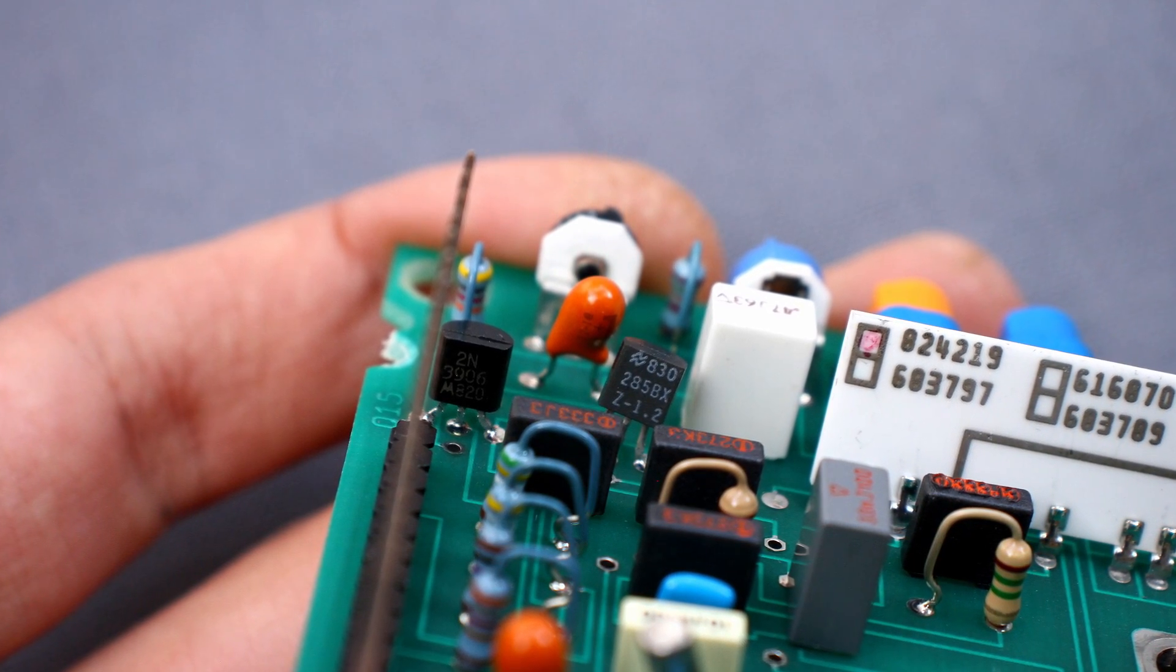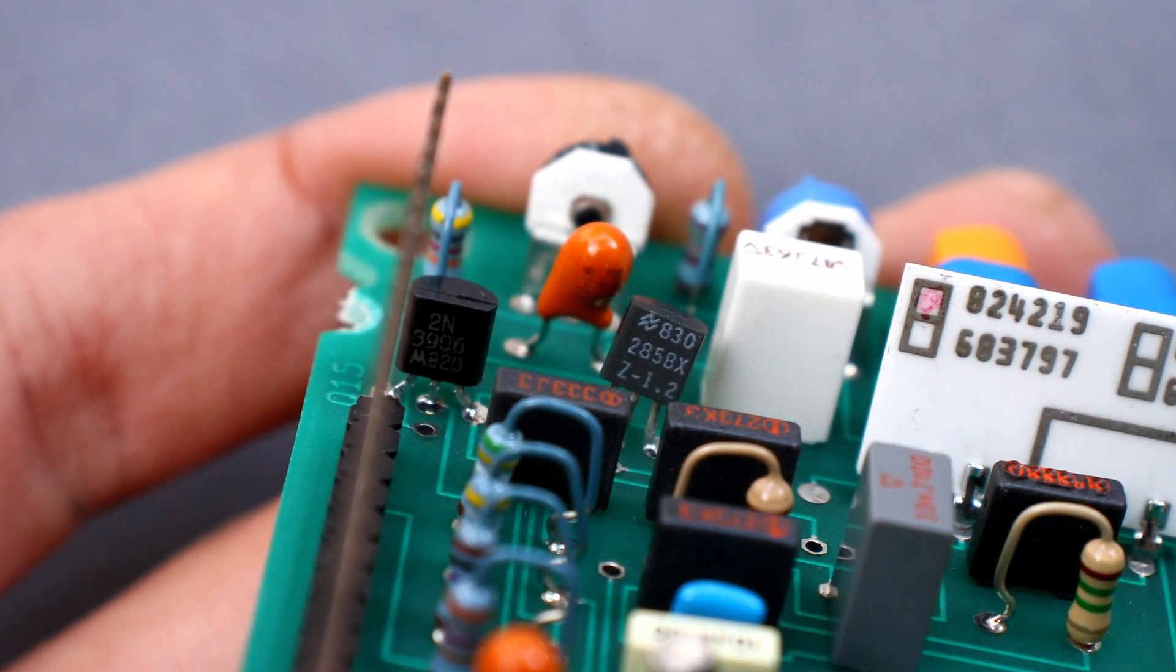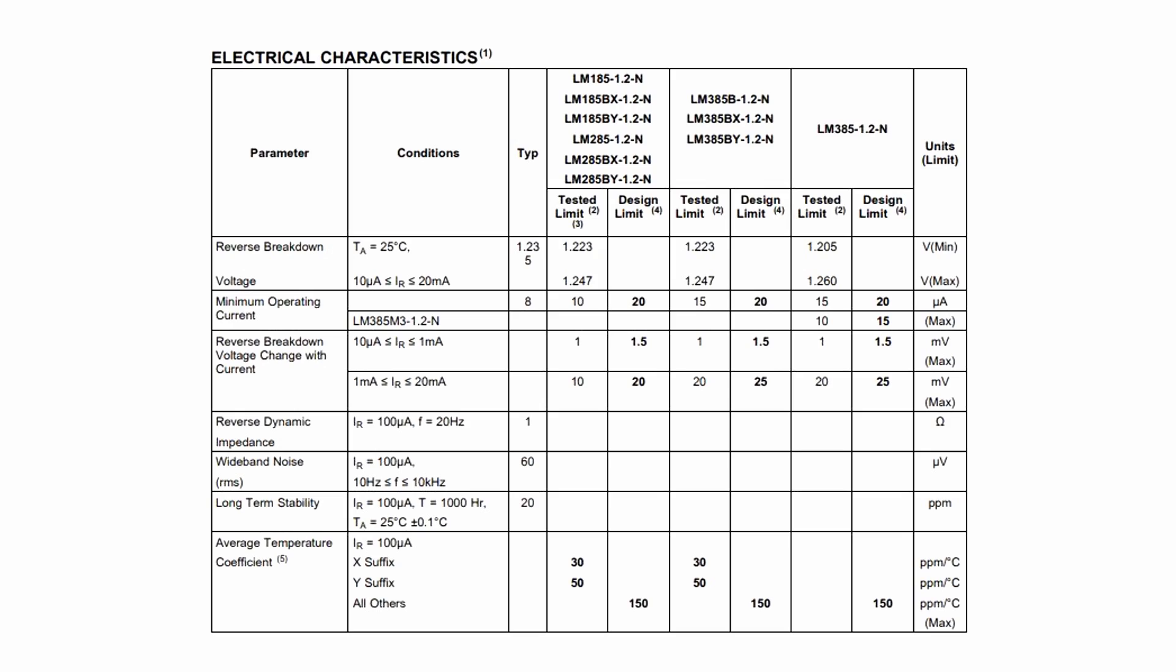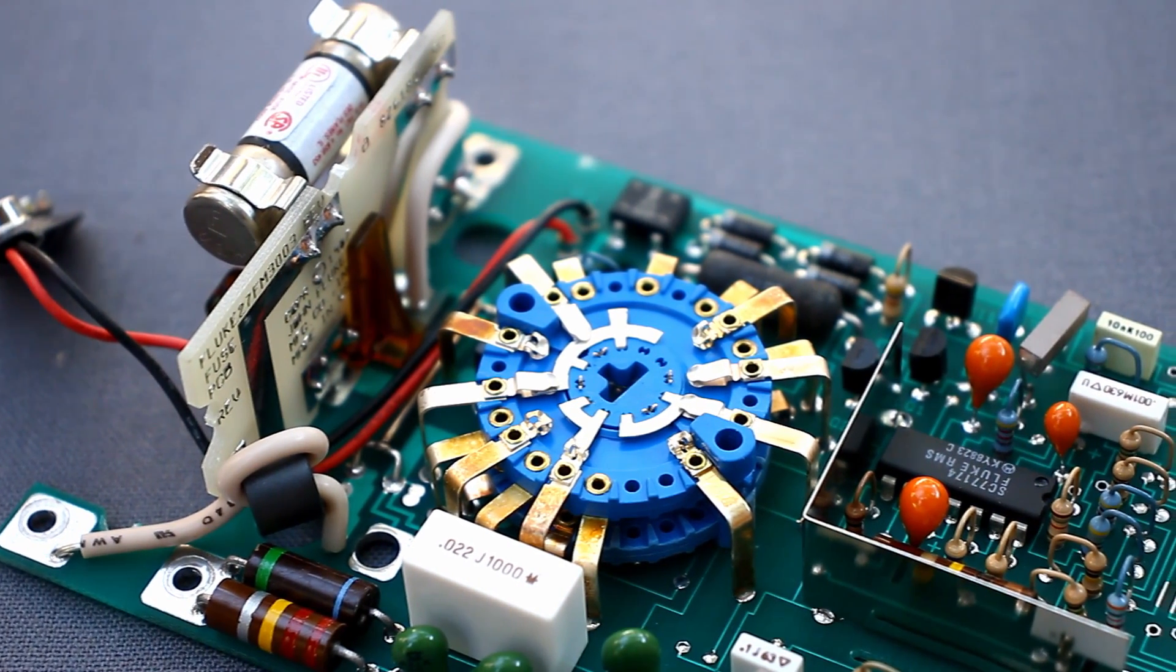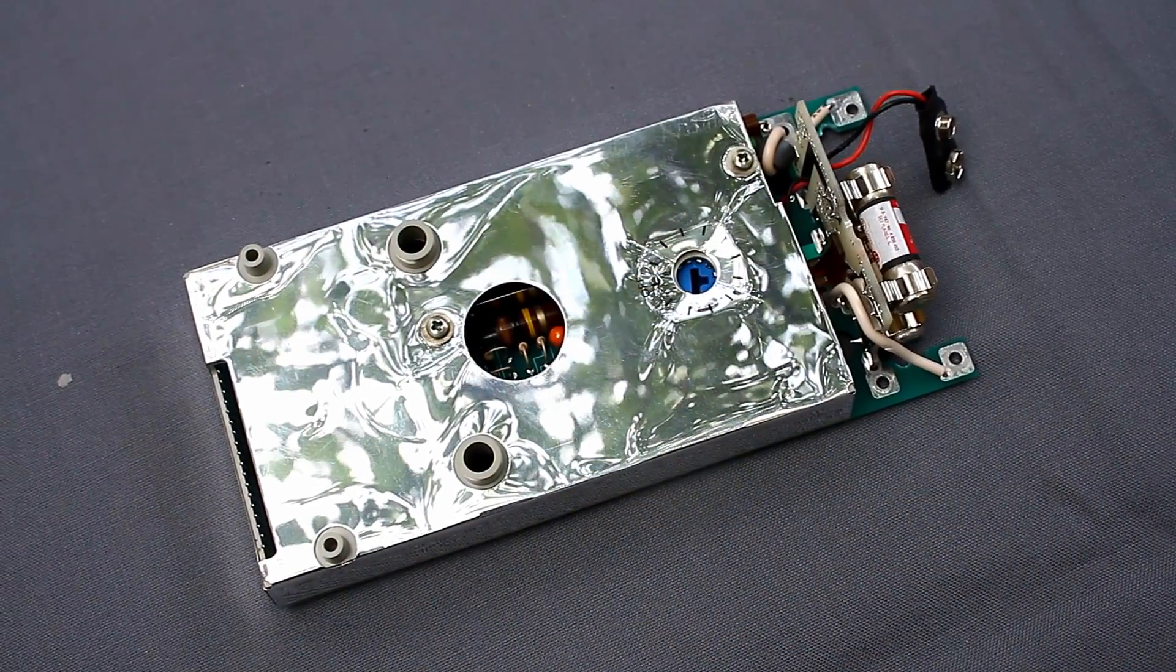This component in a TO98 package, labeled 285BX, appears to be a LM285 micropower solid-state voltage regulator for 1.23V, 60 ppm. In fact, it's a highly stable zener diode, which in this multimeter is used as a voltage standard and the device compares the measured values with the standard.